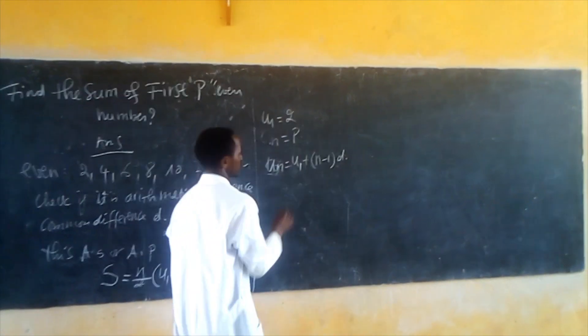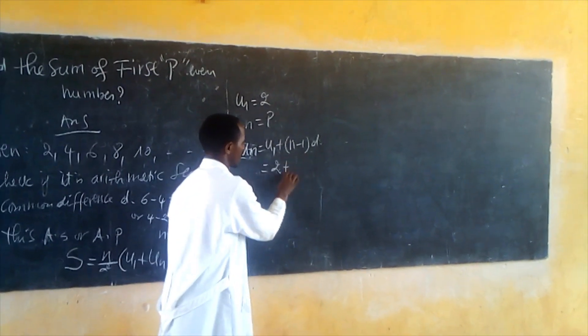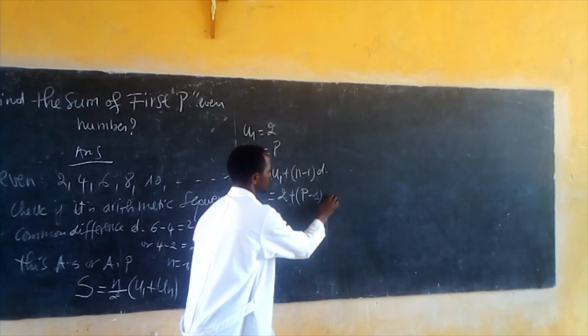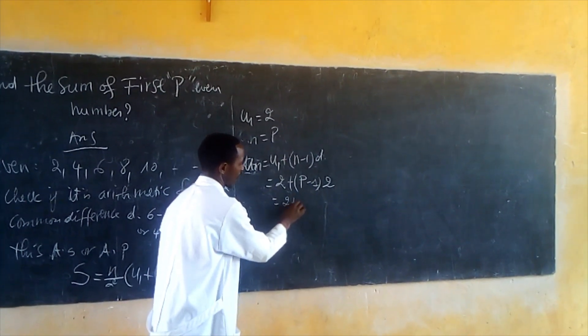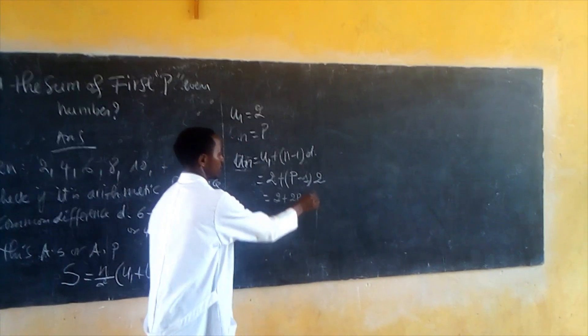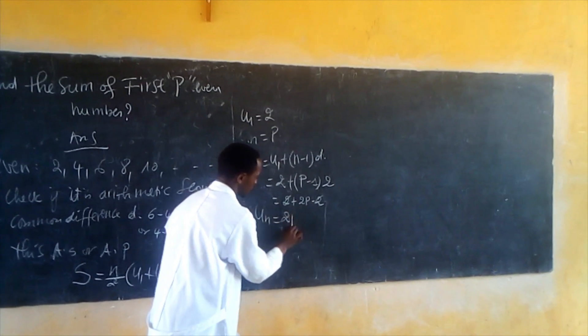So Un equals 2 plus (P minus 1) times D. D equals 2, so Un equals 2 plus 2P minus 2, which equals 2P.